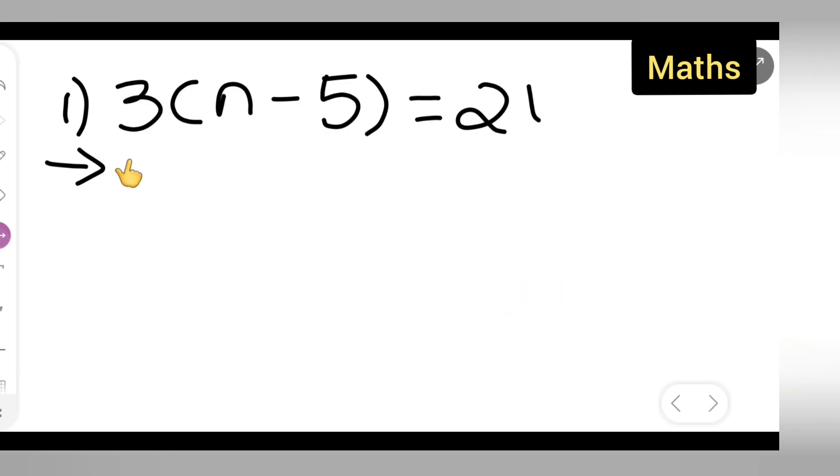So first I will take down the question: 3n minus 5 is equal to 21. I will be doing this by two methods which I can use. First, let me use method 1.